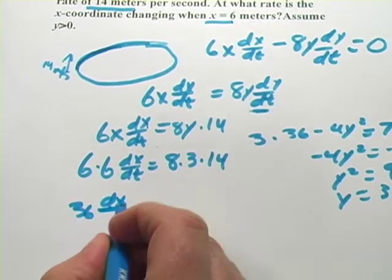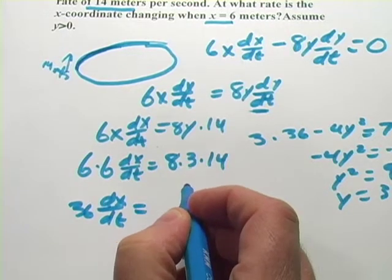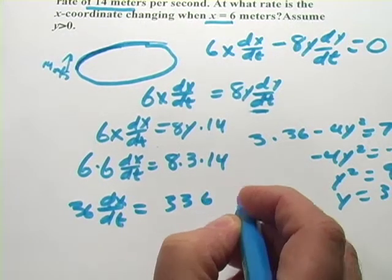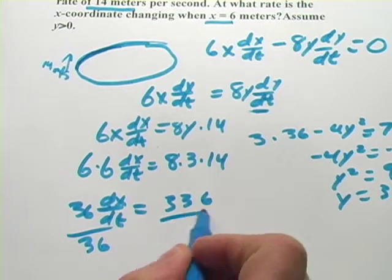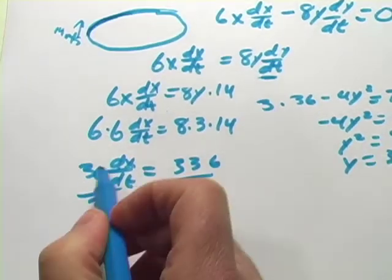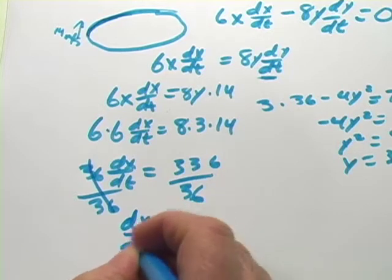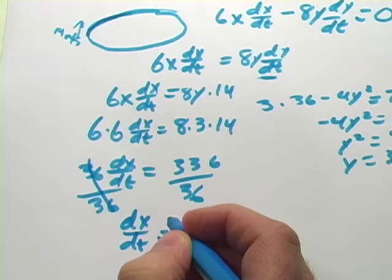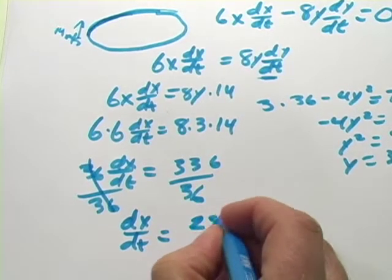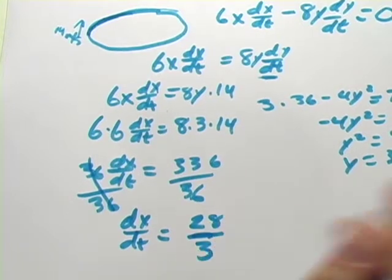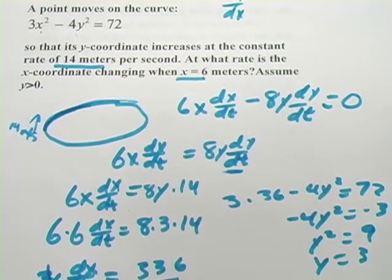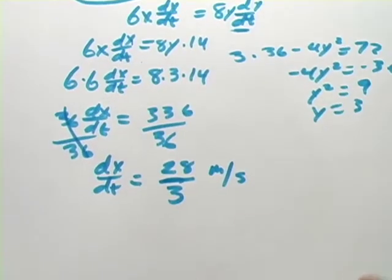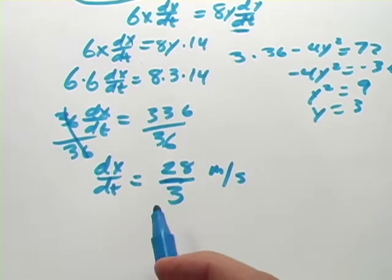So let's go ahead and do that. Let's see. We've got 36 dx dt. And 8 times 3 is 24. This looks like 336. And then we'll divide both sides by 36 to solve for dx dt. And we get dx dt equals, let's see, that's 56 over 6, 28. Looks like 28 thirds. And this is the rate. And our units in the original problem were meters and seconds. So this is going to be meters per second. So that's one type of related rate problem. Let's do another.